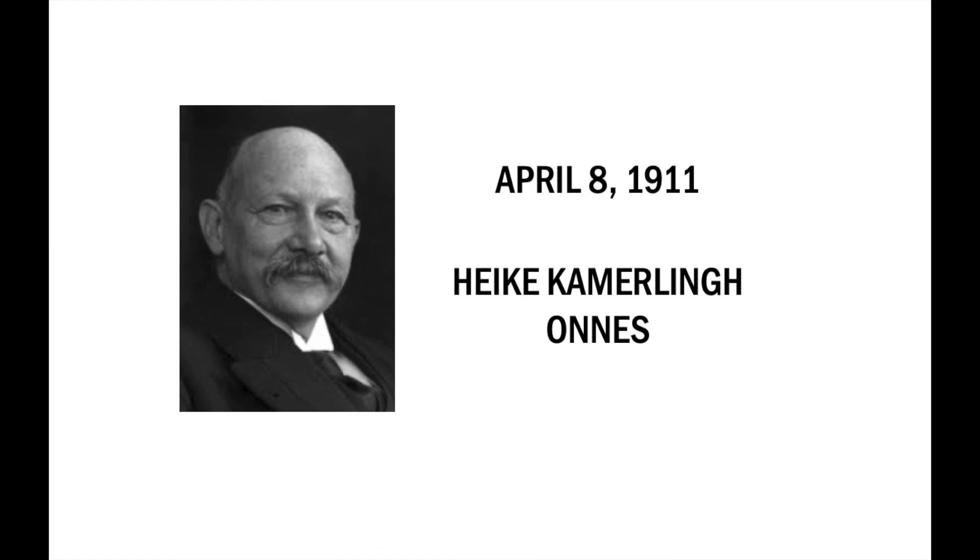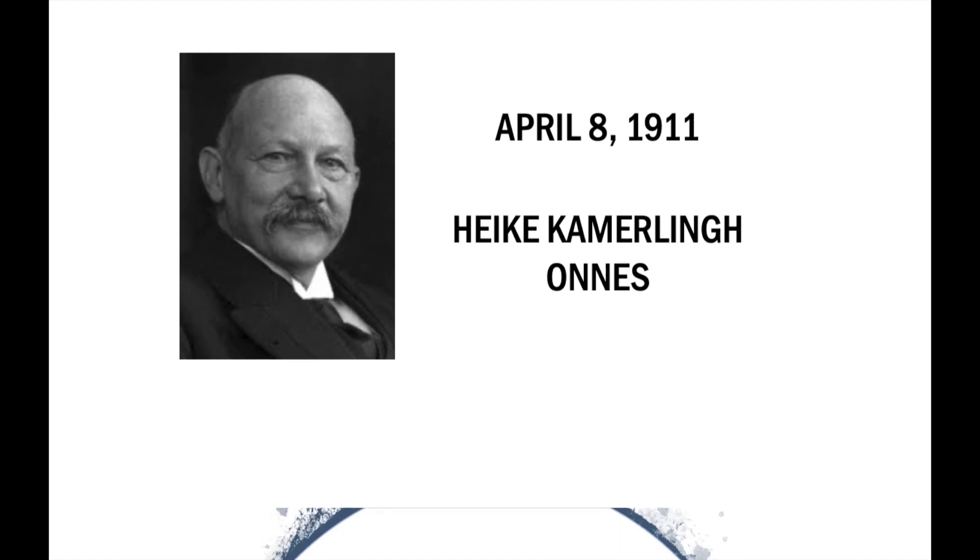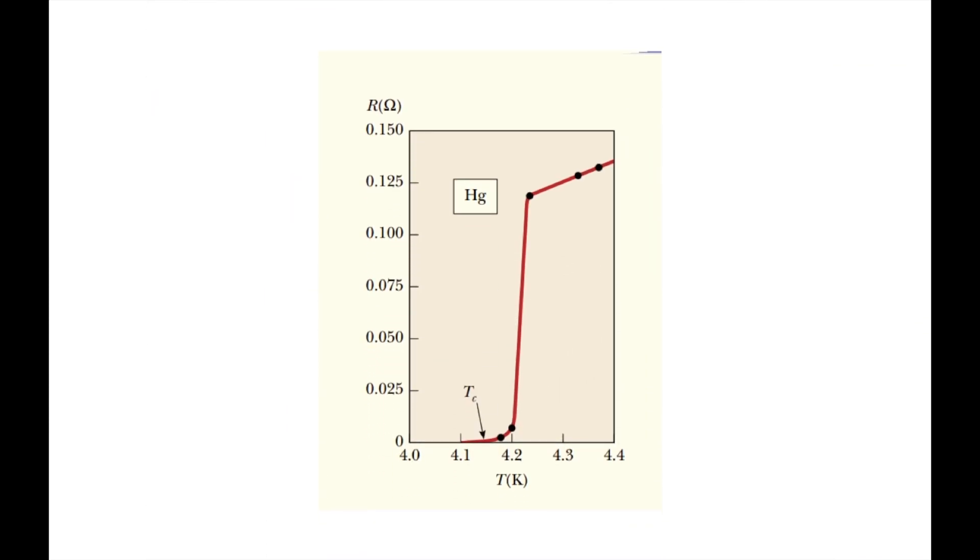Heike Kamerlingh-Onnes, a Dutch physicist, was investigating how resistance varies with temperature in a conductor. It had just been made possible to liquefy helium, which meant extremely cold temperatures could be reached. This allowed him to cool mercury to 4 degrees Kelvin, which is when he discovered that its resistance disappeared and hence the superconductor was discovered.